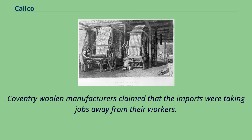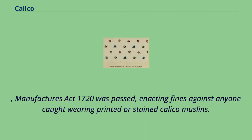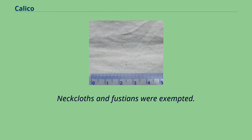Coventry woolen manufacturers claimed that the imports were taking jobs away from their workers. The Woolen Manufacturers Act 1720 was passed, enacting fines against anyone caught wearing printed or stained calico muslins. Neckcloths and fustians were exempted.